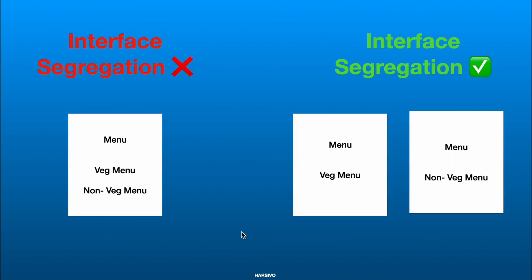Now let's take a real-world example. Let's say you're a vegetarian person and you go to a restaurant and they give you a menu that has both veg options and non-veg options. It would become very difficult for you to search for all the veg options among the non-veg options. So even though this serves the purpose, it would be a very cluttered menu. This vegetarian person would be much happier if they got a separate veg menu.